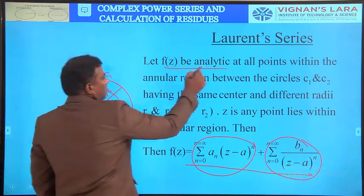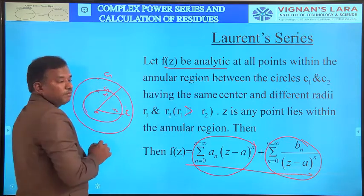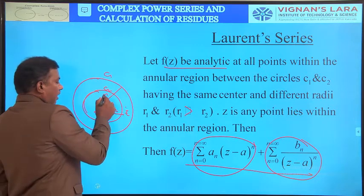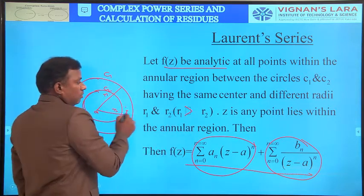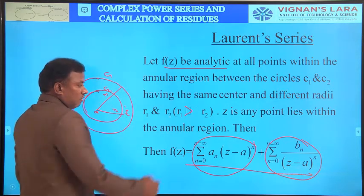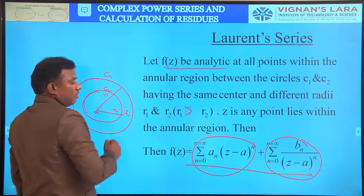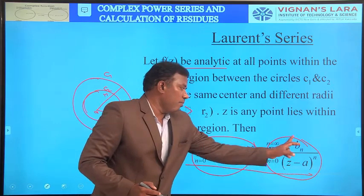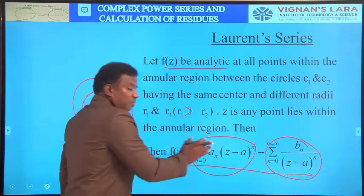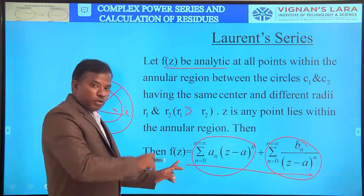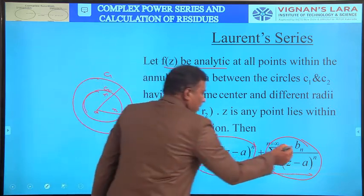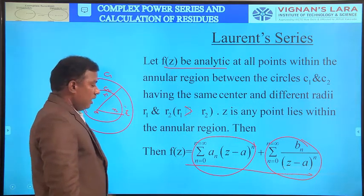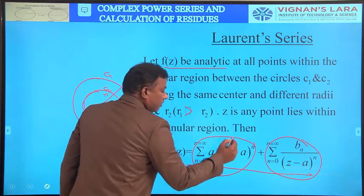The formal statement: f(z) is analytic at all points within the annular region between circles c1 and c2 having the same centre at a and different radii r1 and r2, where r1 is greater than r2, and z is any point within the annular region. Then f(z) equals sigma n=0 to infinity a_n(z-a)^n plus sigma n=0 to infinity b_n/(z-a)^n. If b_n equals zero, it reduces to the Taylor series: f(z) equals sigma n=0 to infinity a_n(z-a)^n.